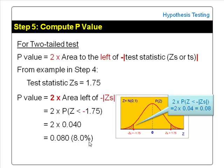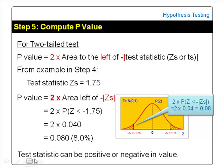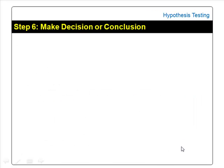Unlike the one-tailed test, it is perfectly okay to get a positive or negative test statistic in a two-tailed test. This is because we are not sure whether the sample mean is larger or smaller than the hypothesized mean.